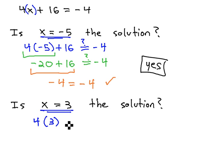4x, or 4 times 3 plus 16, we want to know, does that equal negative 4? Well, again, we'll follow the order of operations. 4 times 3 is 12, plus 16, and we want to know if that equals negative 4.